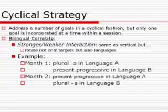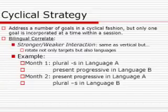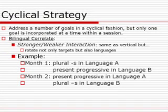Cycles approach, or cyclical strategy: you address a number of goals in a cyclical fashion, but only one goal is incorporated at a time. This is somewhat different than the horizontal strategy where you may be working on multiple goals at the same time. In cyclical, usually you work on one. In terms of how this works with bilinguals — stronger versus weaker interaction, same as vertical — but you rotate not only the targets but also the languages.